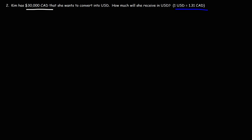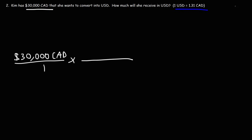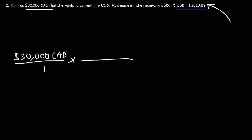Let's start with what we're given: 30,000 Canadian dollars written over one. In the next fraction, we write the two parts of our conversion factor. Since we have Canadian dollars on the top of the first fraction, we want to put that same unit on the bottom of the second fraction so it cancels. We want the unit Canadian dollars to cancel because we're converting to US dollars, so the other part goes on top, giving us our final answer in US dollars.